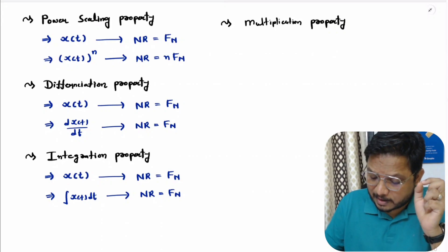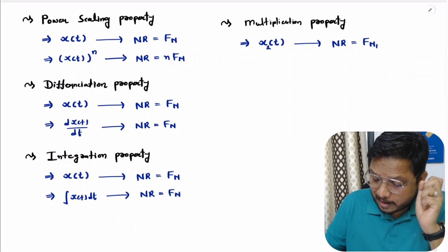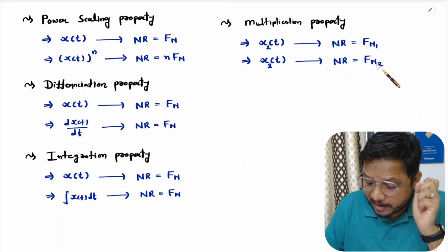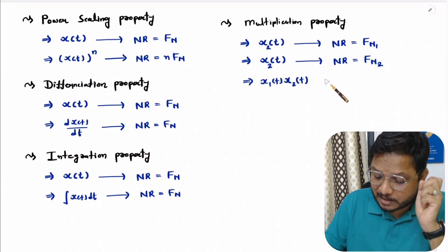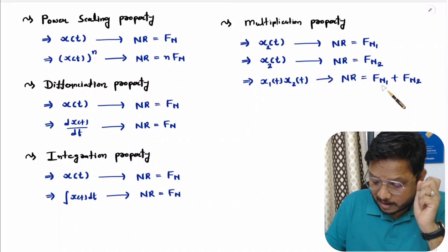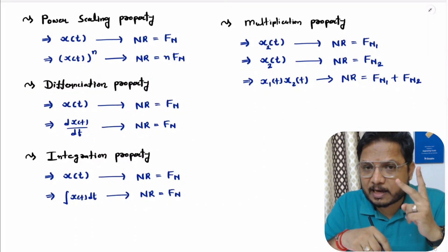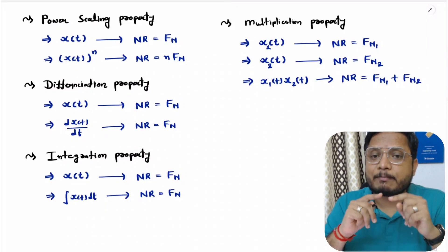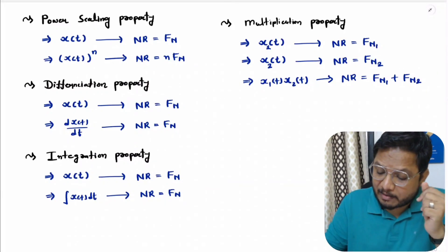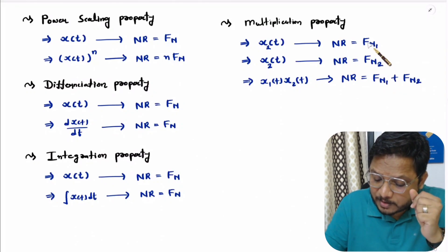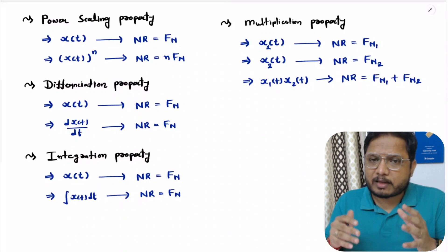The last property is the multiplication property. Consider two signals: x1(t) with Nyquist rate fn1, and x2(t) with Nyquist rate fn2. After multiplication of these two signals, the Nyquist rate will be the addition of the two frequencies, that is fn1 plus fn2. When you multiply two signals, you get frequency components at the sum and difference of the two frequencies. Since the sum has the highest frequency, the Nyquist rate becomes fn1 + fn2.